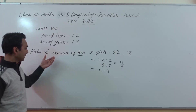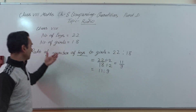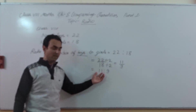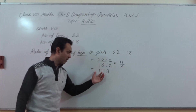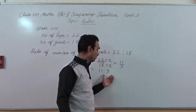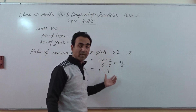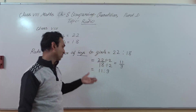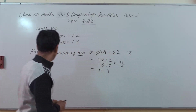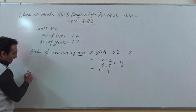So 11 ratio 9 is showing that if the number of boys is 11 and the number of girls is 9 — it means if there are 9 girls in a class, then the number of boys is 11. Let's take another form of this comparison.